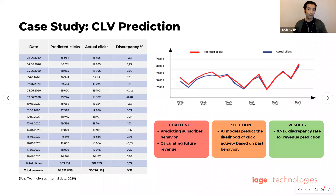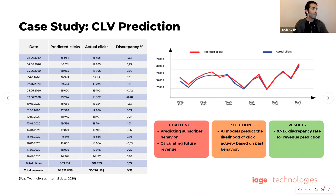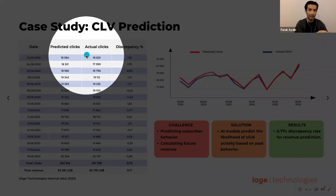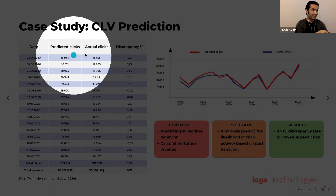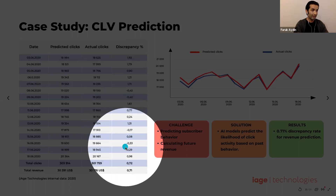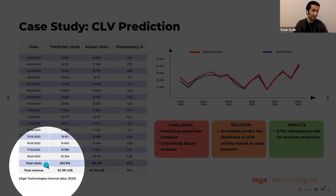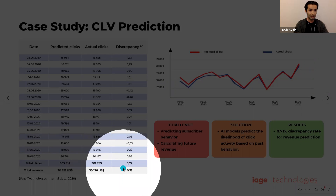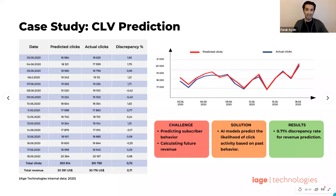Here is an example from one of our clients. On the left-hand side, you can see the predicted clicks and the actual clicks. Thanks to machine learning, the discrepancy between those predictions and the actual clicks is only 0.72, and the discrepancy between the predicted and actual total revenue is only 0.71. CLV can be an excellent tool in the arsenal of today's modern email marketer.